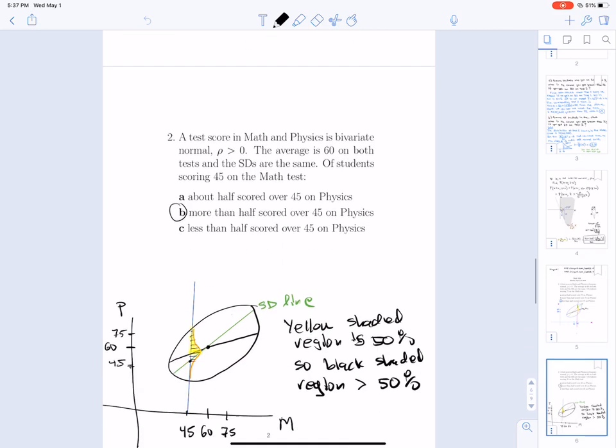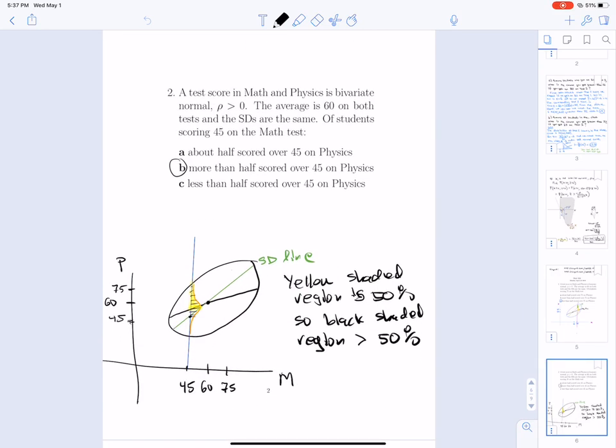Now if you get 45 on the math test, then it will be more than half score over 45. So you can see that in the picture again, the area will be greater than a half.